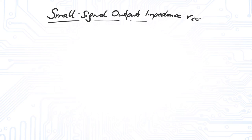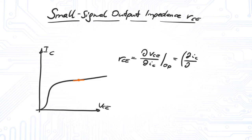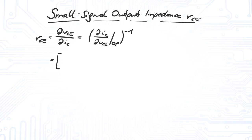The small signal output impedance RCE is the inverse derivative of the output characteristic. The calculation itself is not complicated and rather straightforward.